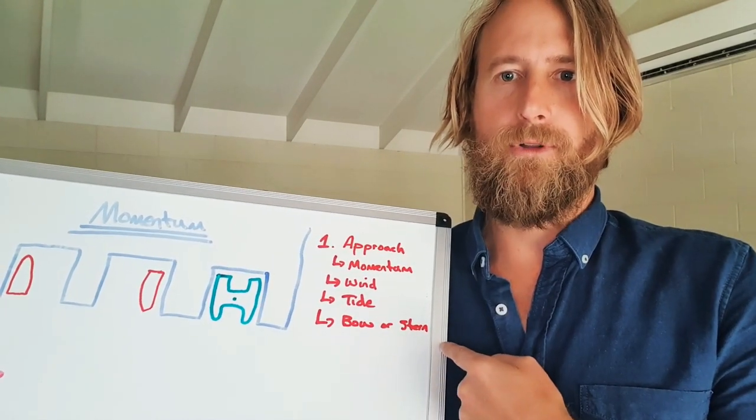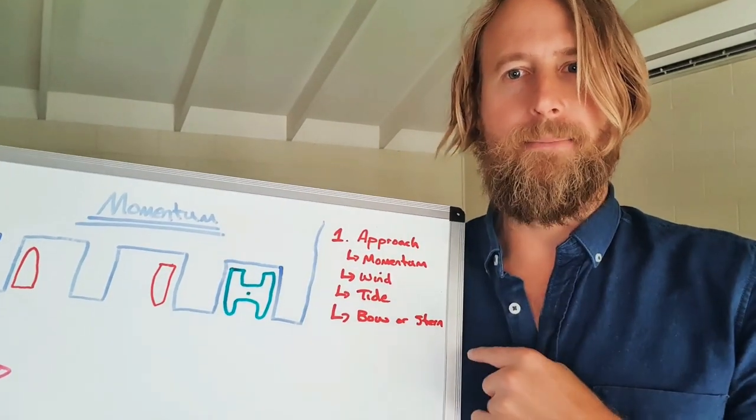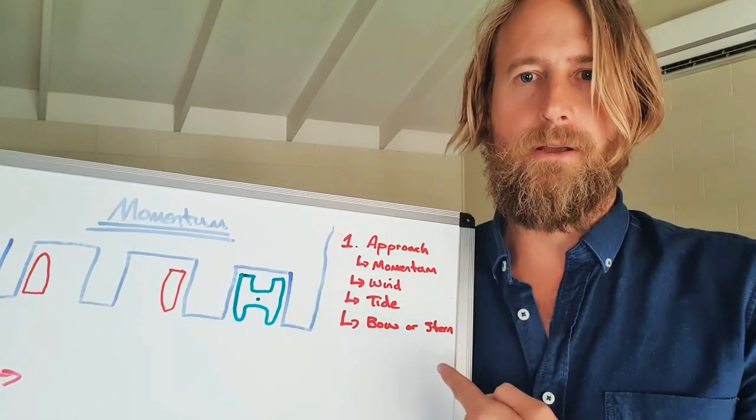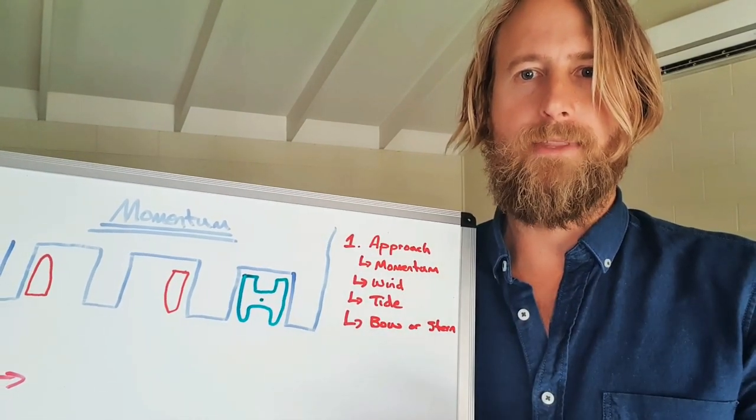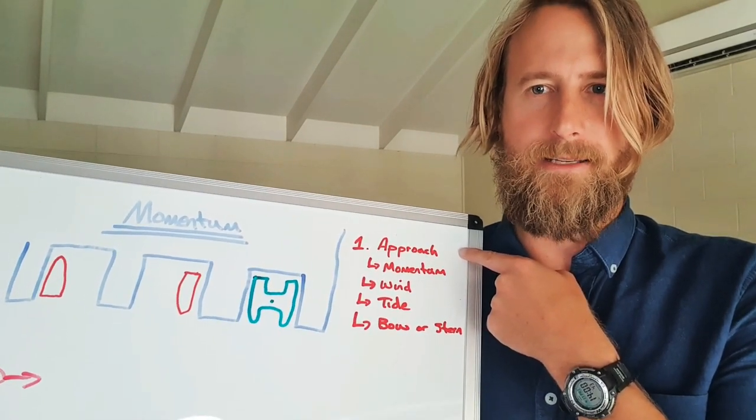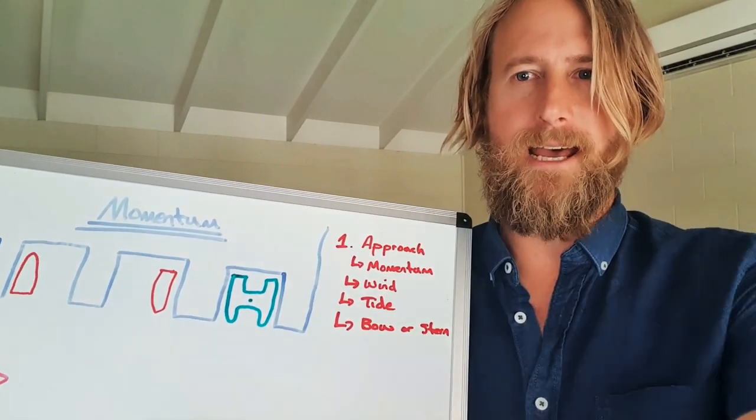And lastly, we'll look at bow or stern approach or how we want to end up in the berth and the dock. So these are the four components we're going to go through in the first part of this and that is under our heading of how do we approach? What's the best way to approach based on the various conditions? So let's take a little bit of a look at momentum for today.